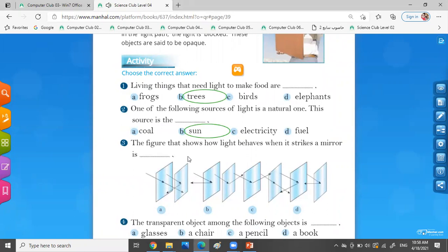The figure that shows how light behaves when it strikes a mirror is... Look, it's a mirror. Now, number A, look at the arrows. Number B, C, and D. Okay, which one? It's a mirror. Strikes a mirror. Which type of these shows the mirror?